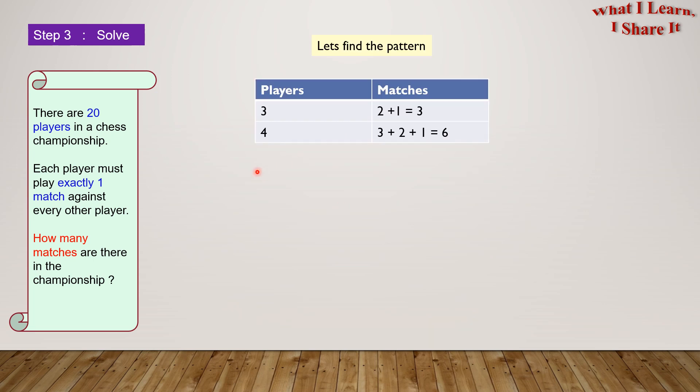Let's find the pattern now. Is there any pattern that we can find from our examples from 3 players and 4 players? For 3 players, we found that the number of matches were 2 plus 1. And for 4 players, we found that the number of matches was 3 plus 2 plus 1. Oh, so here's a pattern. We have to start with 1 less than the number of players and add the numbers until 1. If we apply the same pattern for 5 players, then we'll get 4 plus 3 plus 2 plus 1 equals 10.